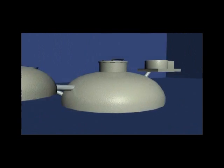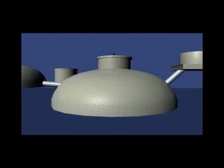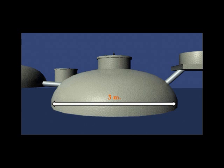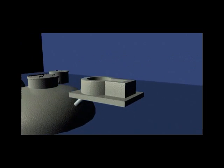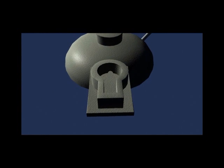Begin the construction process by building a fixed dome digester tank with a 3 meter diameter. Next, build a fill tank adjacent to the digester tank. Food and animal waste will enter the digester tank through the fill tank.